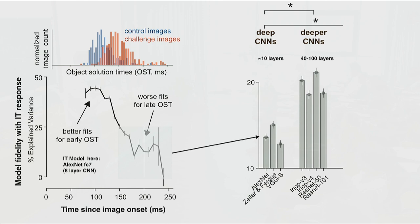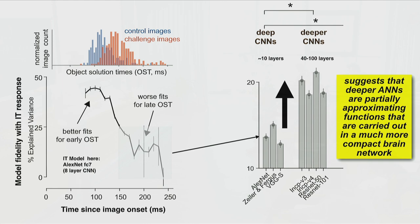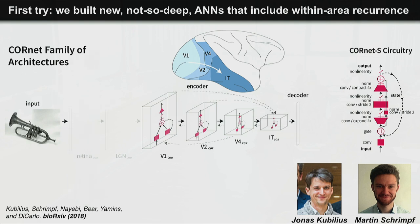There's a difference between algorithm and implementation here — recurrent processing in the brain is time-contained within IT, whereas deeper feedforward networks essentially have IT at different time points within the unrolled network. If you model a recurrent system, you can unroll it into a big deep feedforward system — requiring skip connections and weight sharing. These models are getting deeper and partially approximating functions carried out by a more compact recurrent brain network. In our lab, we call this 'CORnet with recurrent' — a shallower model that explicitly uses recurrent state propagation within each area, as a family of models we call CORnet, developed by Eunice Kobilius and Martin Shrimp.